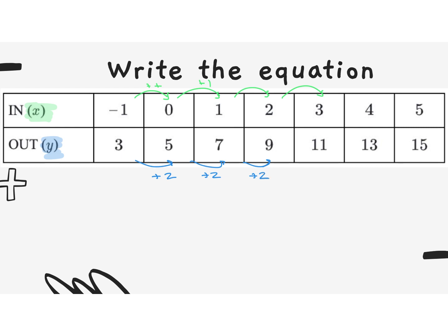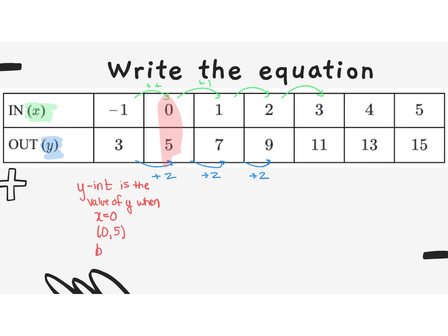Moving back into our table, it's important that we take a look at this value right here, the 0, 5. The y-intercept is the value of y when x is equal to 0. It is written as 0 and then whatever that value is — in this case, it is 5. We use the letter b in the equation y equals mx plus b.